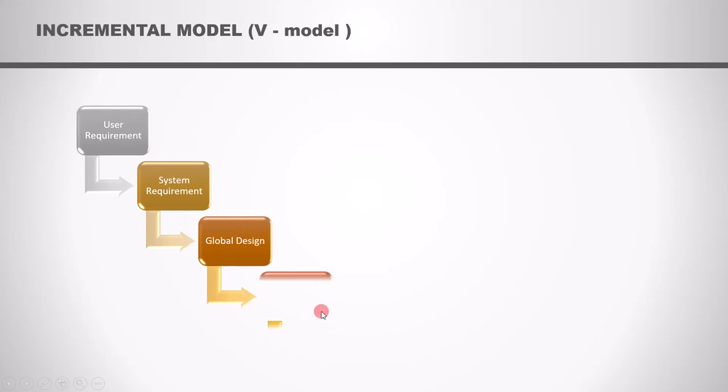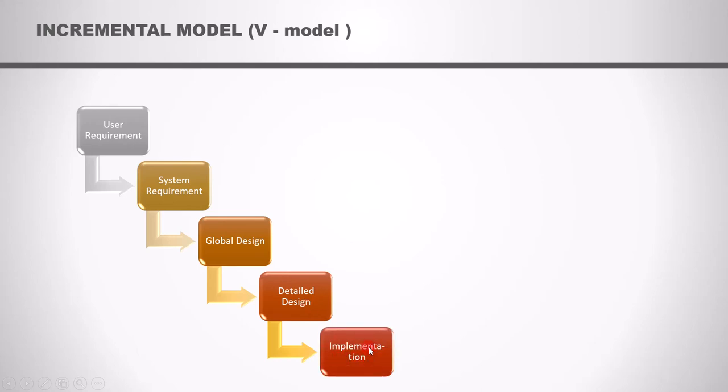Now let's understand the second lifecycle development model — the incremental development model, of which the V-Model is an example. First we get user requirements provided by the customer, and from those we write the system requirements. Once the system requirements are in place, we write the global design and the detailed design. Once the design is done, we start implementing the software. These stages — user requirement, system requirement, global and detailed design, and implementation — are all part of the development activity.